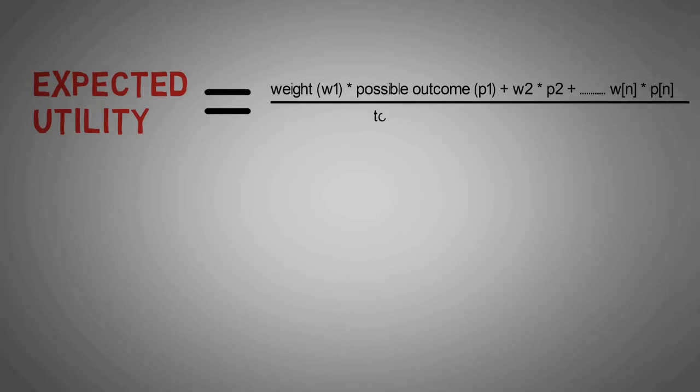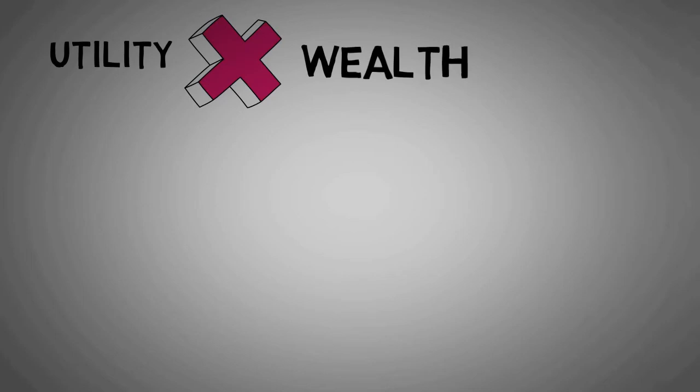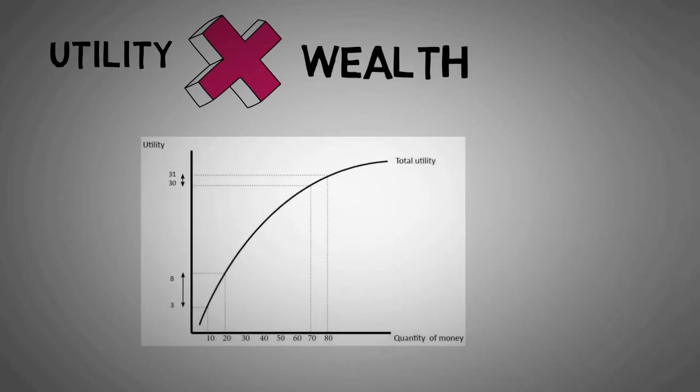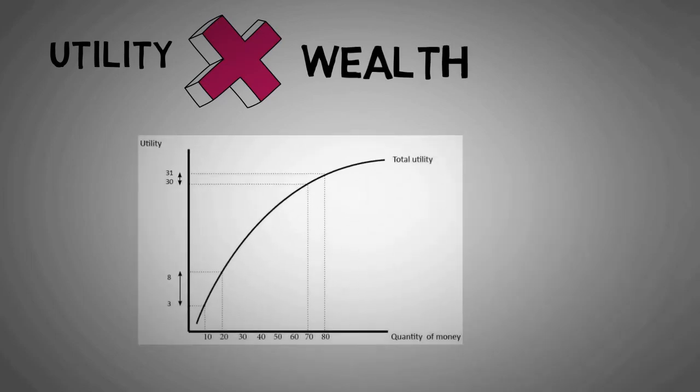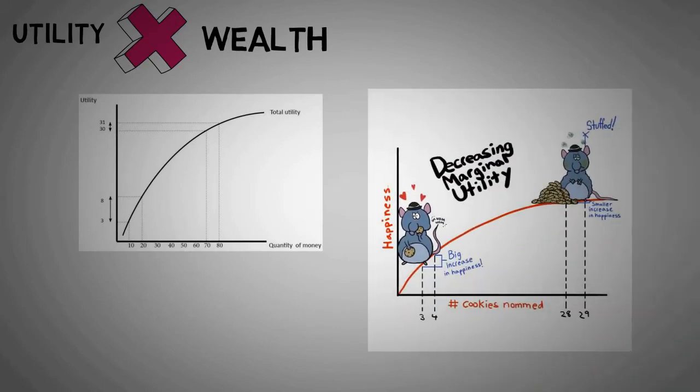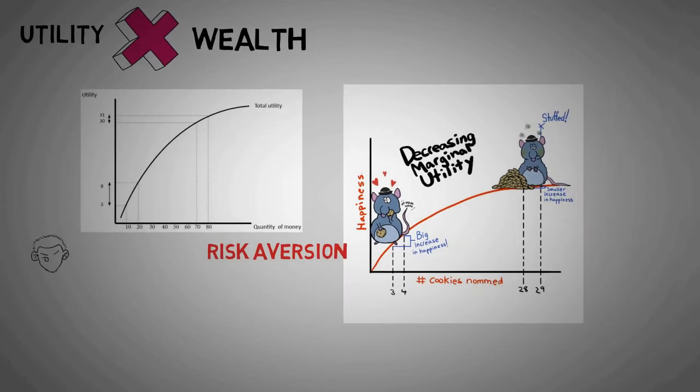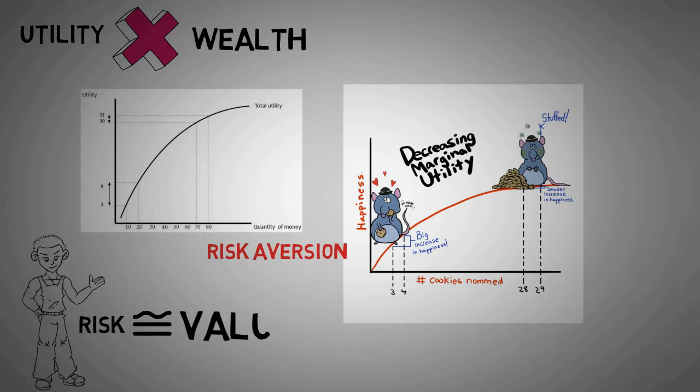It proposes that utility is not a linear function of wealth but a subjective concave evaluation of outcome. Thus it uses decreasing marginal utility concept. It also implicitly assumed the concept of risk aversion. It also assumed that people's attitude towards risk was a by-product of their attitude towards value.